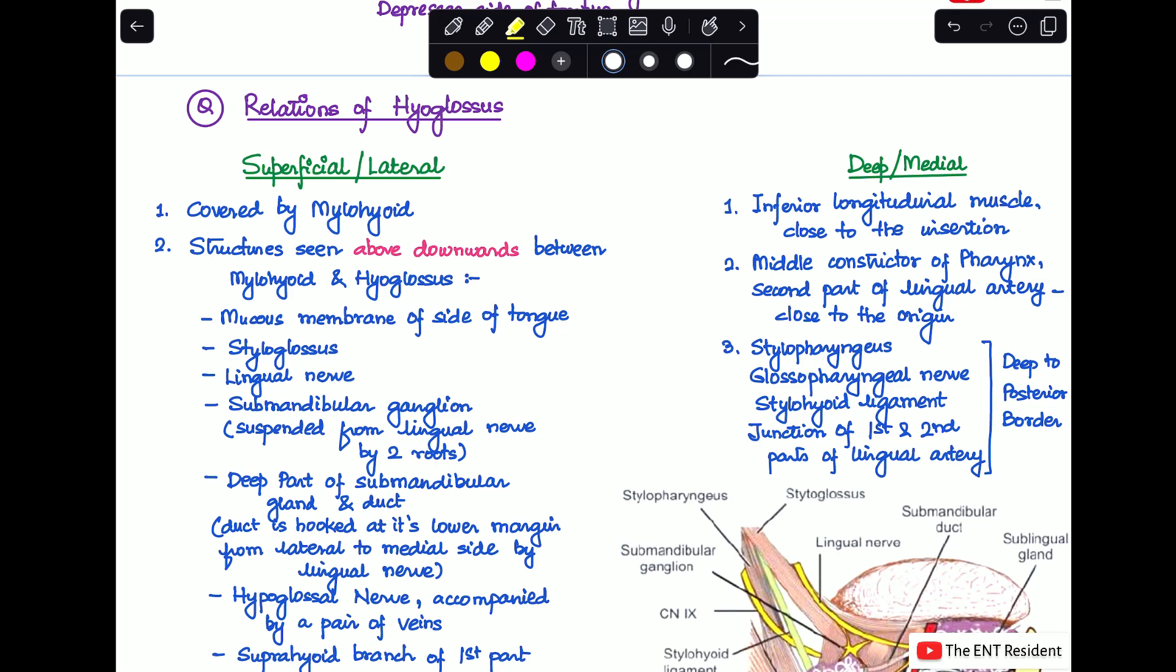The relations of hyoglossus can be divided into two parts: one would be the superficial or the lateral relations, and the other would be the deep or the medial relations. First we'll talk about the deep or the medial relations. These relations you may have to just mug up a little bit to remember. I have also drawn a picture so as to show you how you can demonstrate that when you write your answers. It is very important that you also add diagrams to it, which makes it easier for your examiner to understand that you have an idea about the concept, and as well as it is easy for you to remember when you draw a diagram.